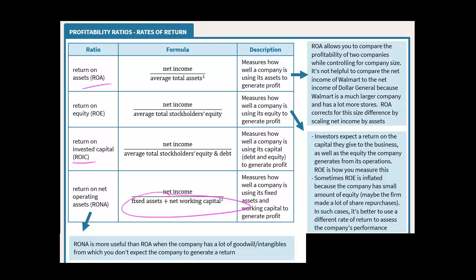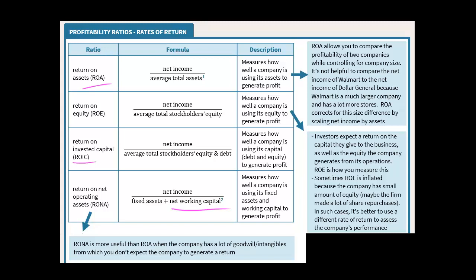Sometimes you'll see return on net operating assets — RONA. In the denominator, instead of all assets, we use fixed assets — property, plant and equipment — plus net working capital, which is current assets minus current liabilities. Why not just use ROA? Because ROA includes things like goodwill, which isn't a real operational asset you can sell. RONA focuses on assets we actually expect to earn a return on, which is why someone might use that measure instead.